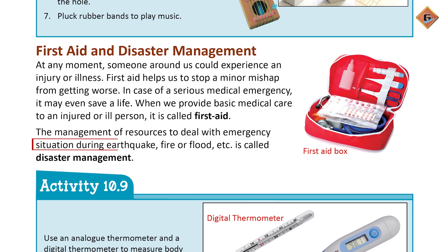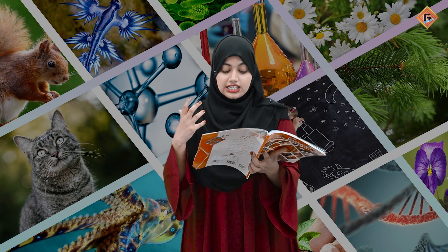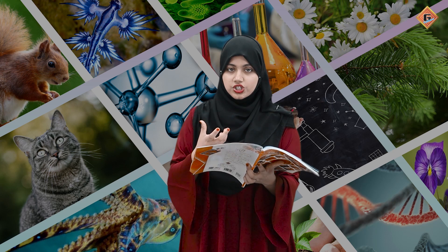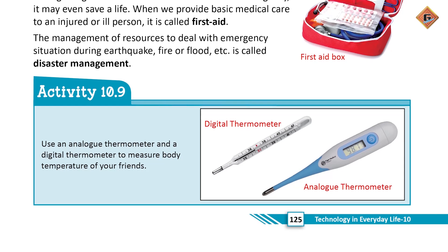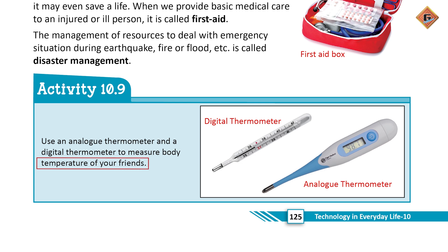During earthquake, fire, or flood is called disaster management. Jab earthquake aajaye, ghar mein aag lag jaaye, ya flood aajaye, tab aapne resources ko istemal karke us situation se kaise bachna hai — usko hum disaster management kehte hain. Ab aap ek activity perform karenge: aapne ek analog thermometer lena hai aur ek digital thermometer lena hai, jisse aap apne friend ka body temperature check karenge.